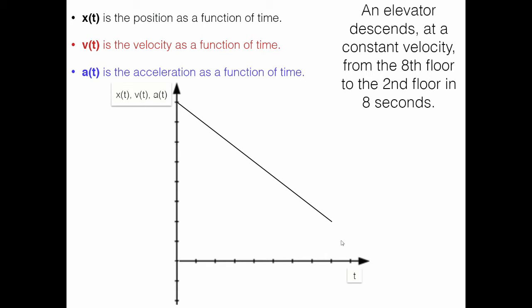We need to look at the slope of the position graph. We run eight but we rise negative six, so that's a negative six rise over an eight run. Negative six eighths equals negative three fourths — that's the slope of this graph, simplified to negative three fourths. And that's a constant slope, so that slope becomes the values of the velocity graph. They have one value everywhere: negative three fourths. So we should have a constant line at negative three fourths on the velocity graph, and that's exactly what I generated here.